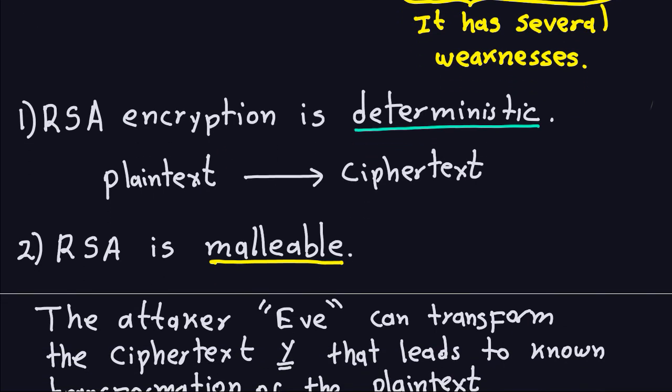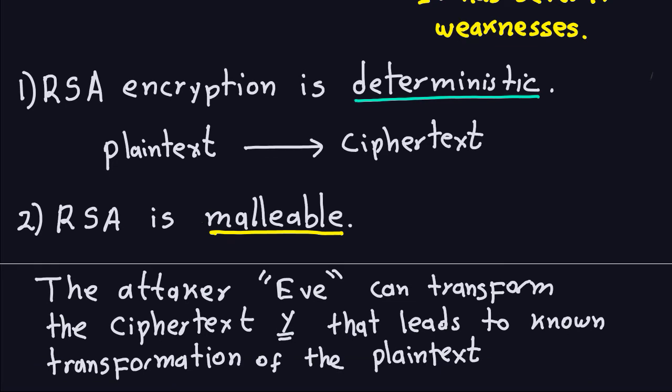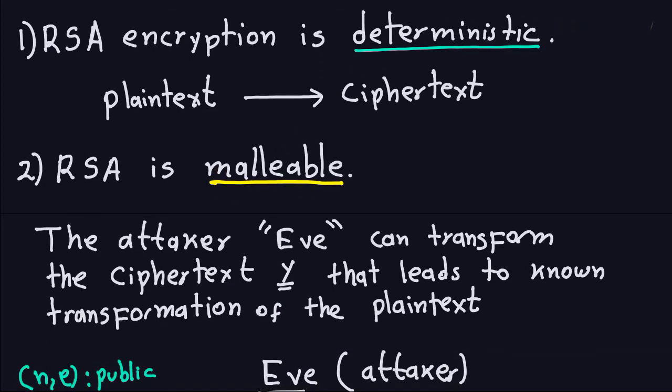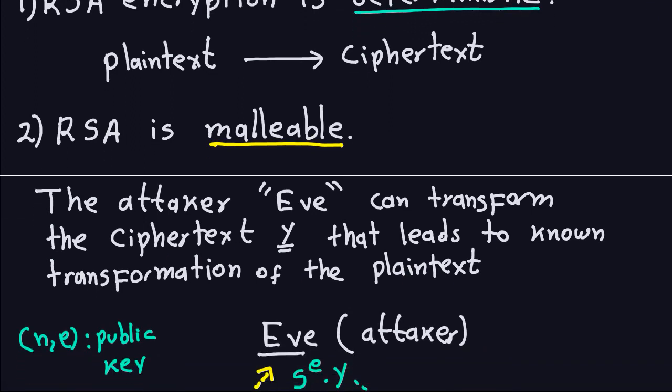Another weakness is that the RSA is malleable, meaning that the attacker can manipulate the ciphertext in a way that when the receiver gets it, the receiver won't realize that it's a modified plaintext. The attacker, of course, all the time here is Eve. And the attacker can transform the ciphertext Y that leads to known transformation of the plaintext.